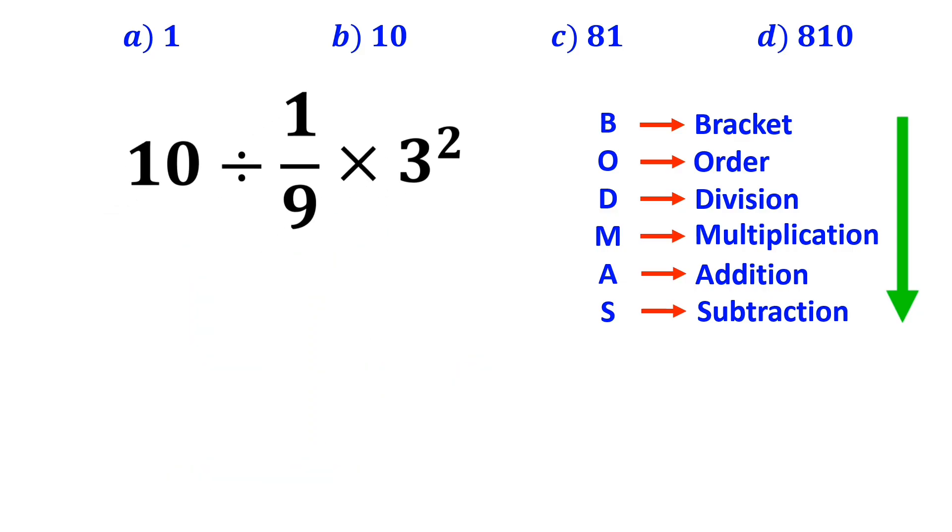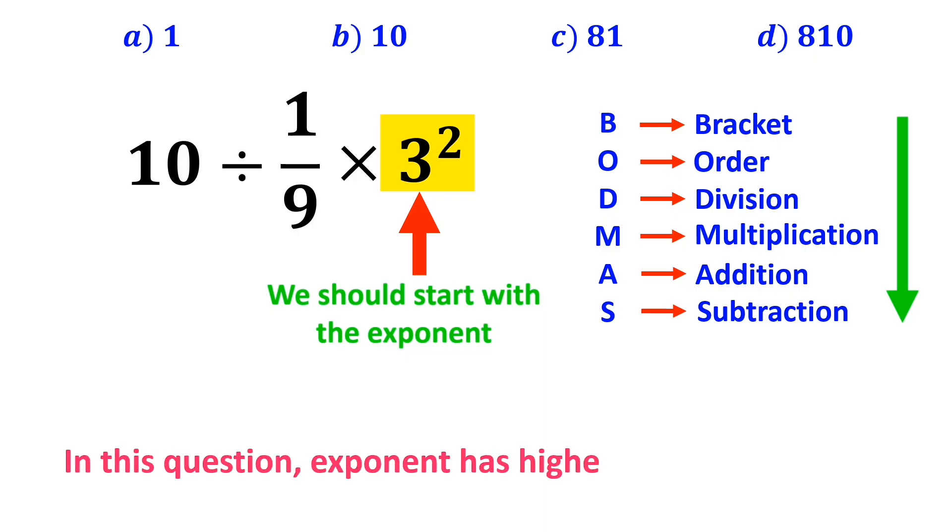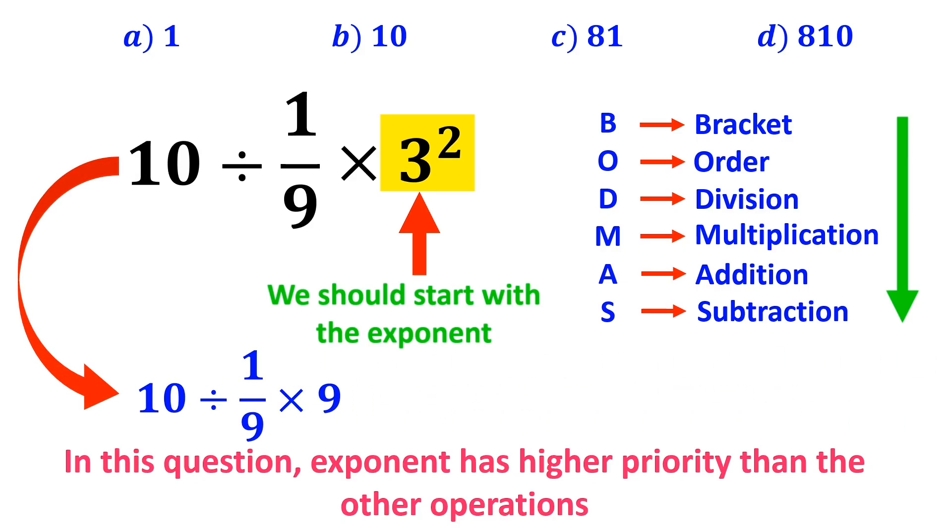According to the BODMAS rule, we should start with the exponent, because in this question, the exponent has higher priority than the other operations. So, instead of the original expression, we can write 10 divided by 1 over 9 times 9.